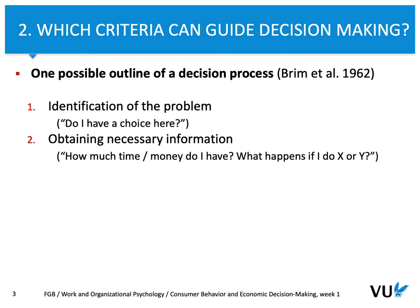Then the second element leads to obtaining necessary information. From a theory of rational decision-making, we may say that a consumer can think: how much money do I have, how much time do I have for making a decision, and what happens if I choose this or another product? Of course, it's not always like that, but from a perspective of rational decision-making, this is what we can think about.